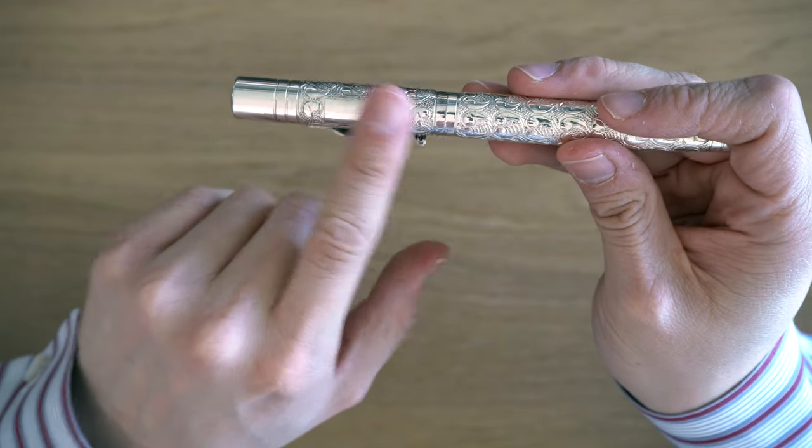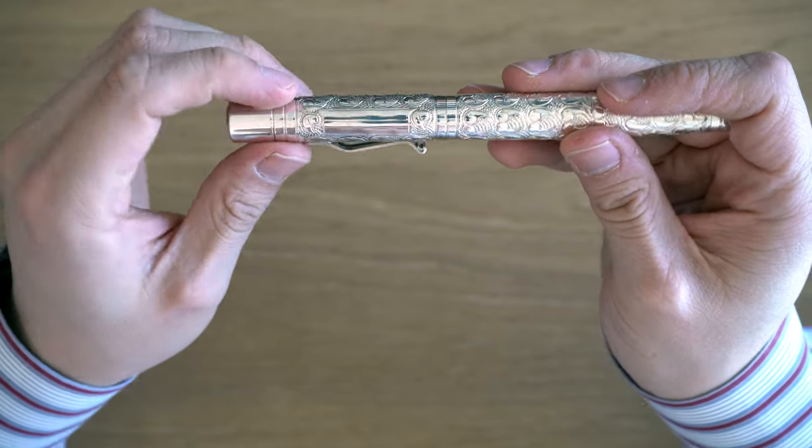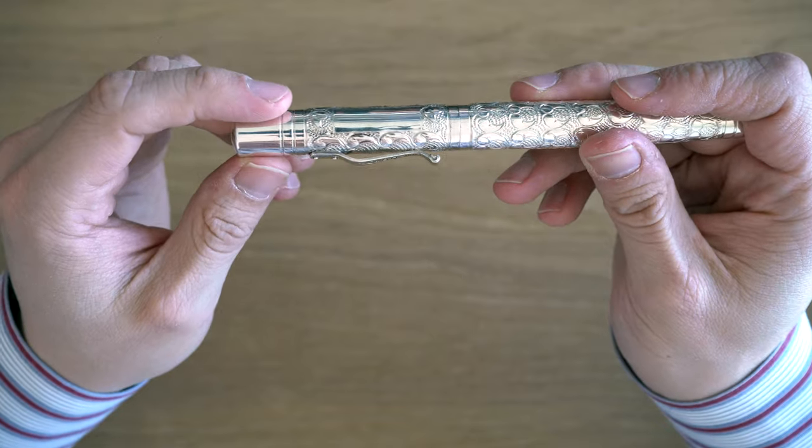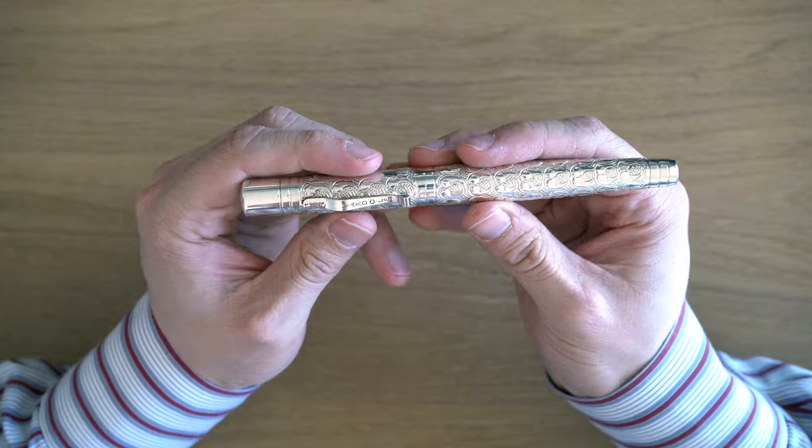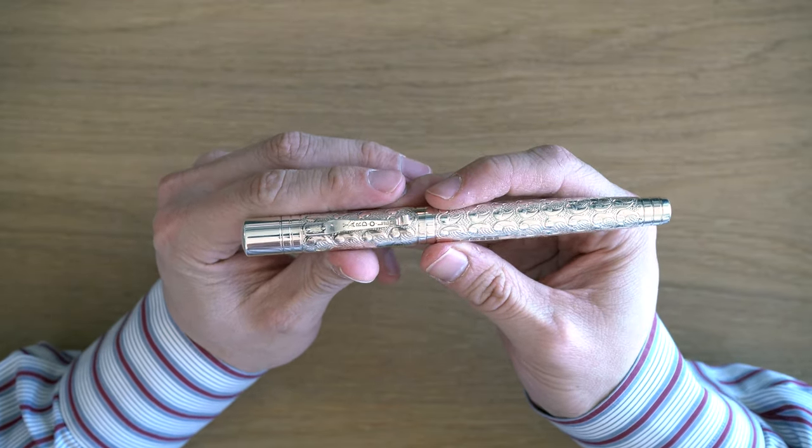And then here we have a spot on the cap for an engraving. You can put your initials there or something. It's a long pen, and it's a big pen. They call this the Grand because it's a big one. It's styled like an old propelling pencil.